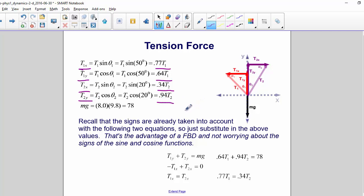And of course, Mg is equal to the mass, 8 kilograms, times G, 9.8, so that is 78 newtons.